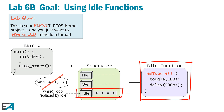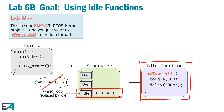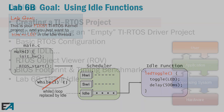So in idle, we're going to add a function that toggles the LED, delays 500 milliseconds, and then goes back into idle — over and over again. Just like we've done before, but this time it's within the TI-RTOS scheduler.